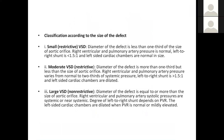VSDs can also be classified by size. Small VSDs have a diameter less than one-third the size of the aortic orifice, with normal RV and pulmonary artery pressure, left-to-right shunt less than 1.5:1, and normal left-sided chambers. Moderate VSDs are moderately restrictive, with diameter between one-third and the full size of the aortic orifice; RV and PVR vary from normal to near-systemic pressure, and shunt is more than 1.5:1 with dilated left-sided chambers. Large non-restrictive VSDs have diameter equal to or greater than the aortic orifice, with RV and pulmonary artery pressure equal to systemic; left-to-right shunt depends on PVR, and left-sided chambers are dilated.